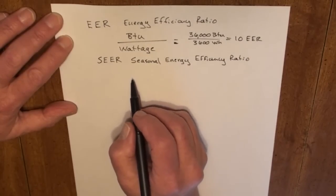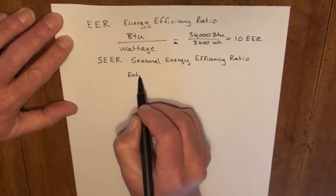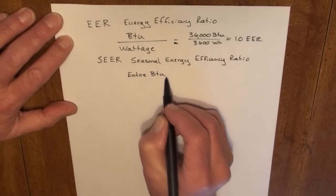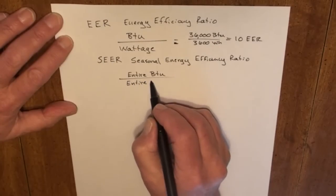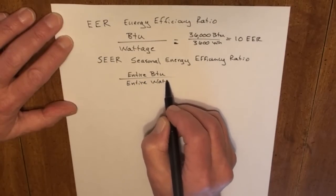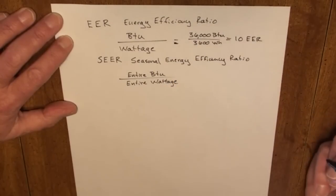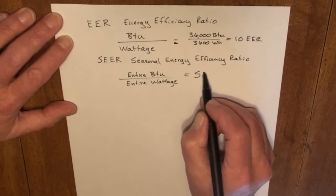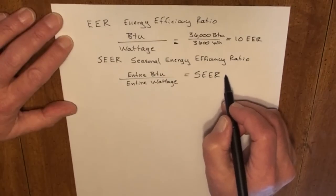So now they would calculate this by the entire BTU divided by the entire wattage over the period of the entire year, and that would give a SEER rating.